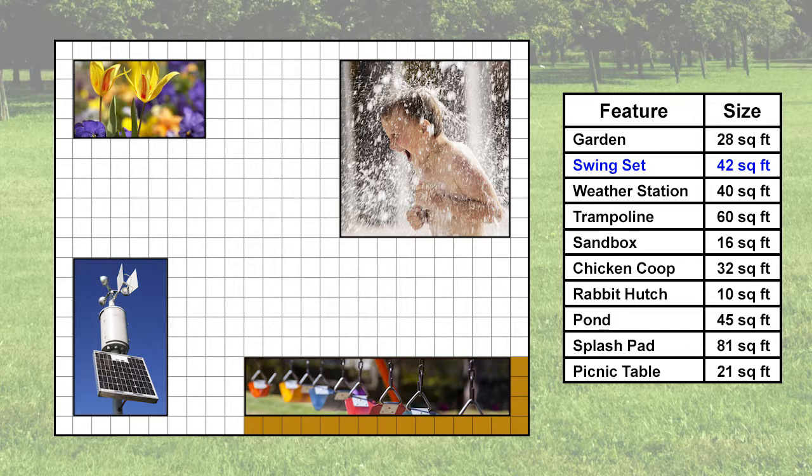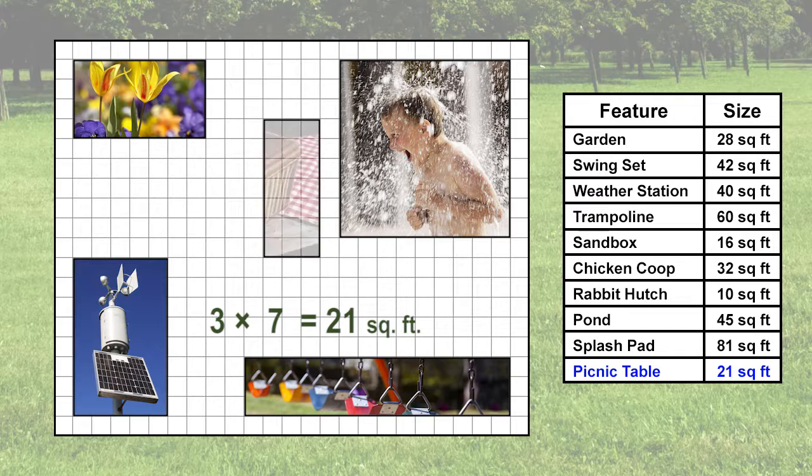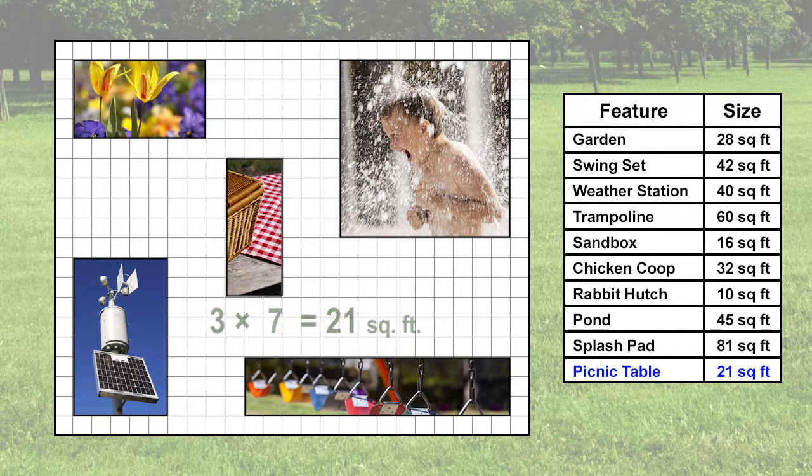We will place it on the bottom right corner of the graph paper, leaving 1 foot from the outer edge. The last feature we need to add is the picnic table. It takes up 21 square feet. The factor pairs for the table would be 1 times 21 and 3 times 7. We will use 3 foot by 7 foot dimensions. Let's place it in the center of the graph.